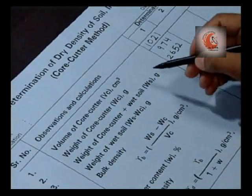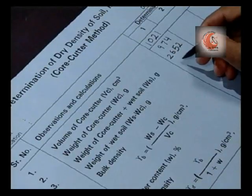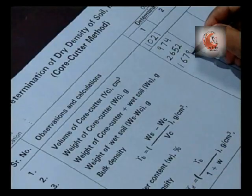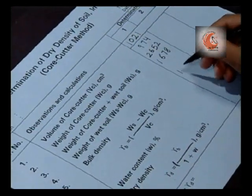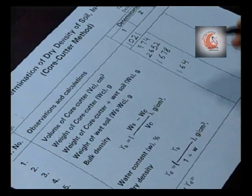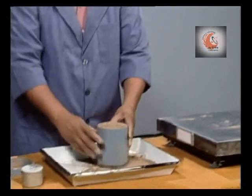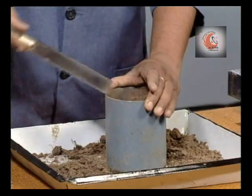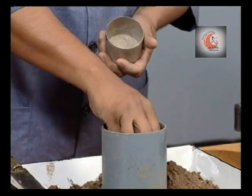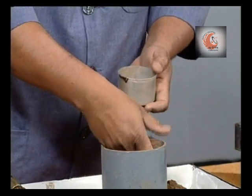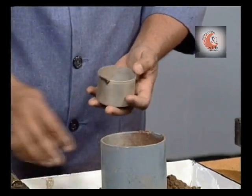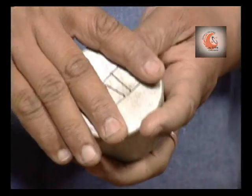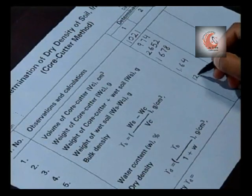The weight of wet soil is the difference of WS and WC. Bulk density is equal to weight per unit volume. Now extract the soil from the cutter and take a representative soil sample from the middle for water content determination using standard procedure. Water content in this case is 12.43%.